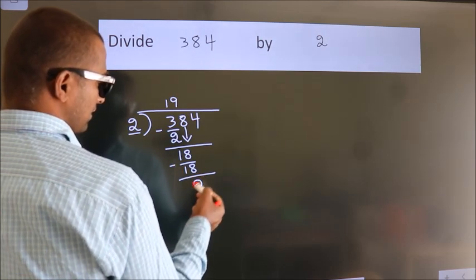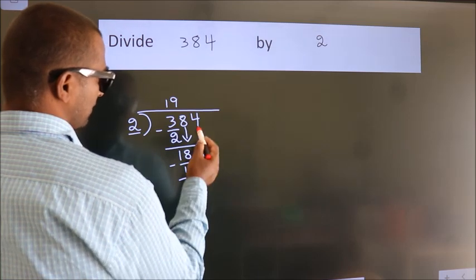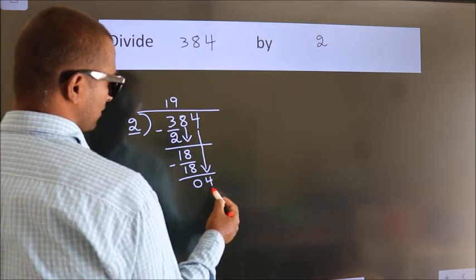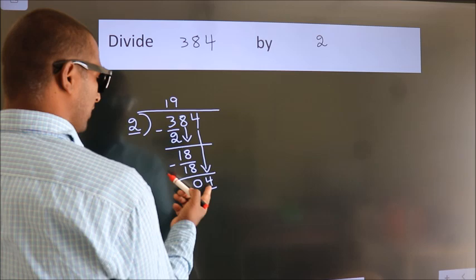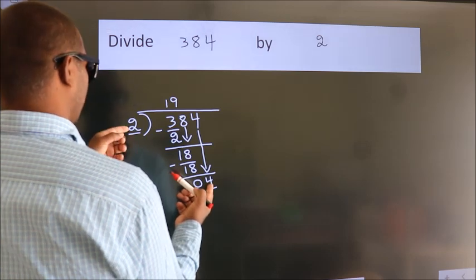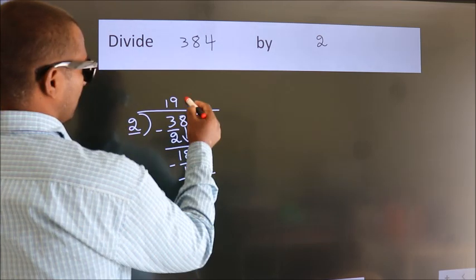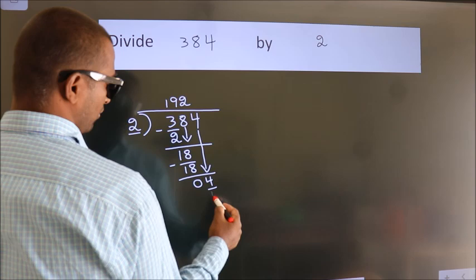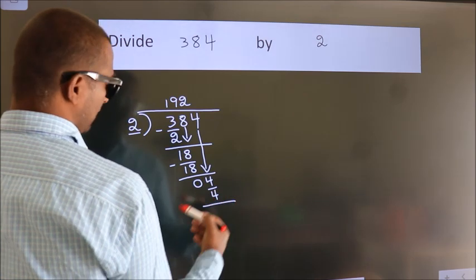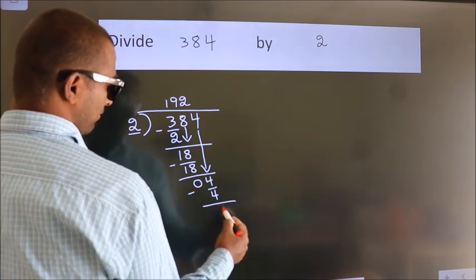After this, bring down the beside number. So, 4 down. So, 4. When do we get 4? In 2 table, 2 2s, 4. Now, we subtract. We get 0.